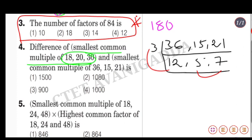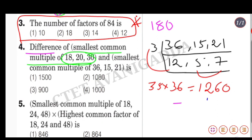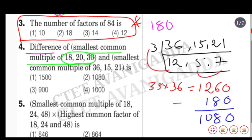The LCM calculation gives us 1260 for one set. The difference between the two LCM values equals 1260 minus 180, which gives us 1080. So the answer is 1080 and option 2 is the correct answer.